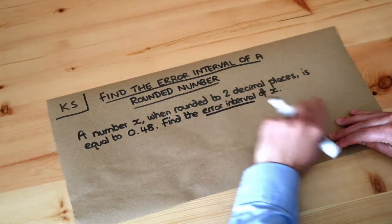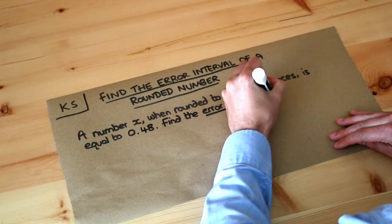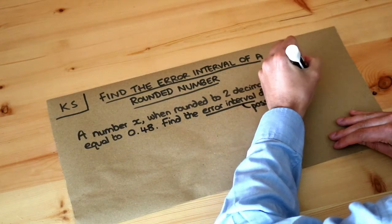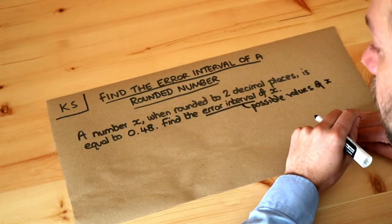Now what the error interval means is the possible values of x. So what could have x been before it was rounded to 0.48?